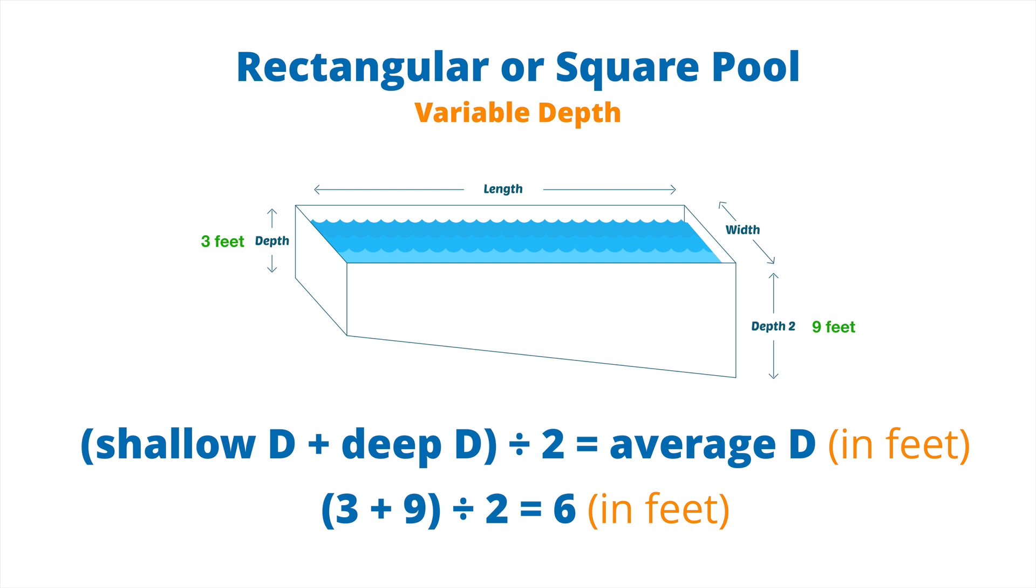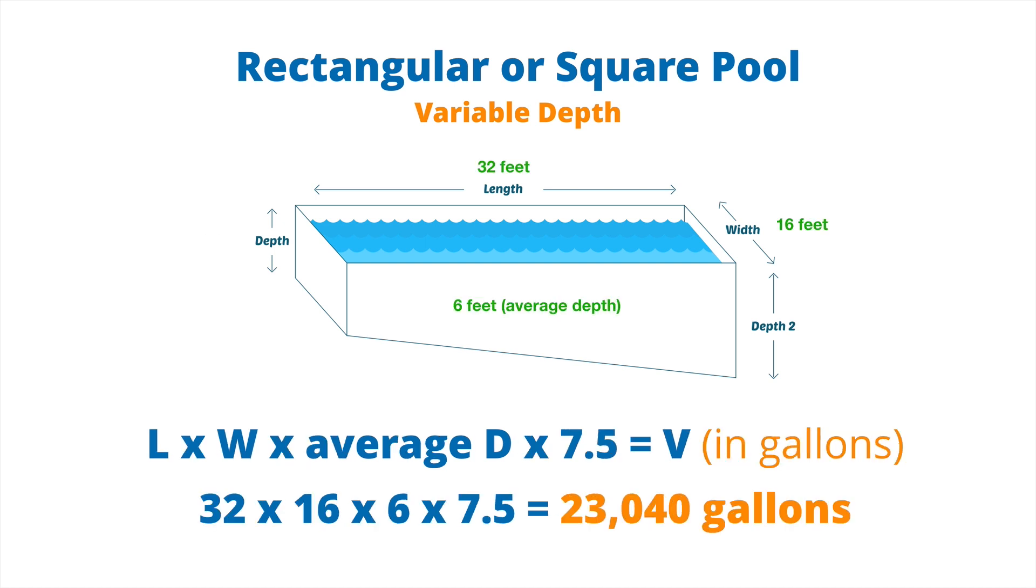More commonly, we have a rectangular or square pool with a variable depth. We have a shallow end of about three feet that slopes down into nine feet. First we have to figure out the average depth of your pool. We take the shallow depth plus the deep depth and divide it by two to get the average. So if we took three feet plus nine feet, divided it by two, we would get six feet average depth. Let's take the same example, a 16 by 32 pool. We take 32 times 16 times the average depth of 6 times 7.5, and we get 23,040 gallons.